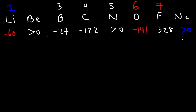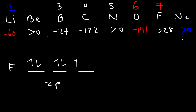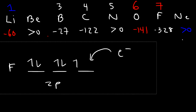Looking at the halogens: fluorine ends in 2p⁵, so it has space to add an extra electron and really wants to fill that last orbital. When it does, it releases energy because you're not placing the electron in a very high energy level. Additionally, the nuclear charge on fluorine is high — as you go right, nuclear charge increases. Being relatively small with a high nuclear charge, fluorine has a strong affinity for electrons and releases a lot of energy when it gains one.